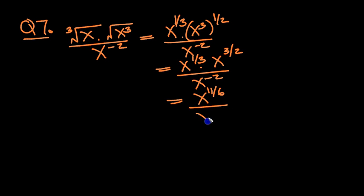When you add in the numerator, then over x to the minus 2, and when you divide you subtract. So 11 sixths take away 12 sixths will be x to the minus one-sixth.